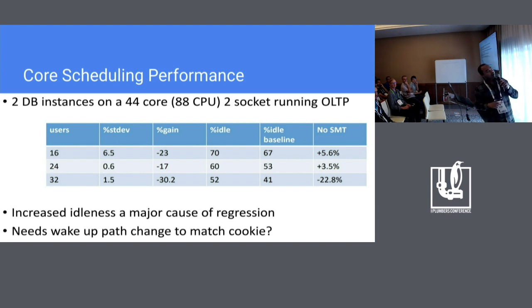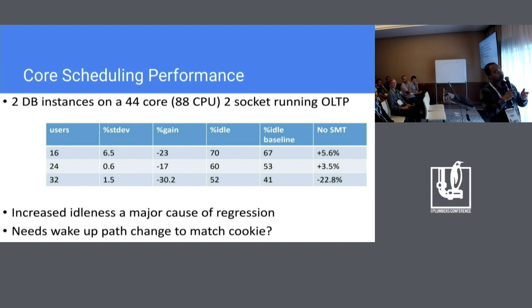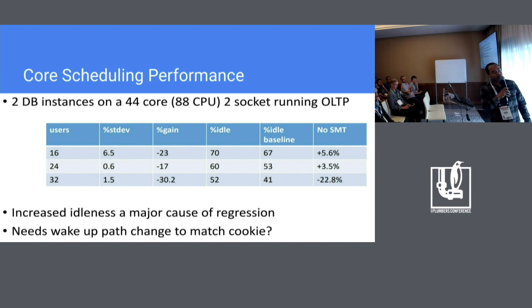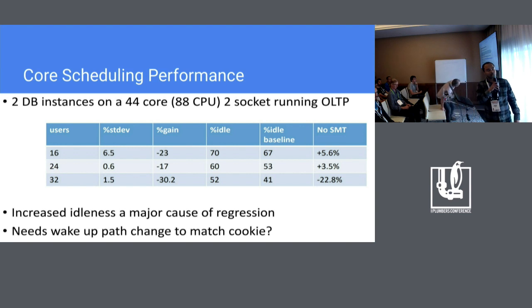In this slide, I'm showing two DB instances — two PDB instances running on the same host, which is a 44-core two-socket x86 system, each running an OLTP workload using TPC. The idea was to compare how much performance we are losing with respect to the baseline, which is not using any core scheduling. I varied the number of users to ramp up the load. At 32 users, total system utilization was around 50%. The percentage gain column is all negative — we are seeing substantial performance loss, mostly because of the forced idleness that the core scheduler imposes on certain hyperthreads when it cannot find matching tasks.